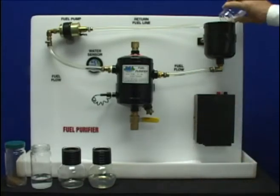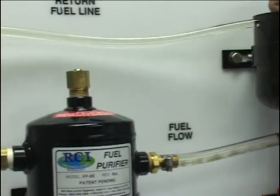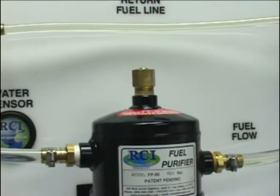As you can see, the water and contaminated fuel is coming down the fuel line into the RCI Technologies fuel purifier where it is being separated.